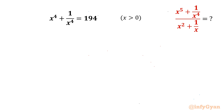Welcome to Infigyan, my dear friends. In this video, we have one very interesting algebraic puzzle. We have to evaluate x power 5 plus 1 over x power 4, divided by x square plus 1 over x. Given x power 4 plus 1 over x power 4 equals 194, and x is positive.